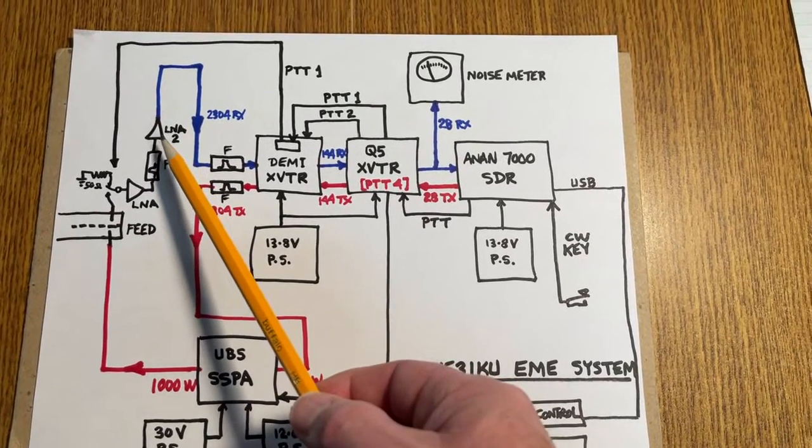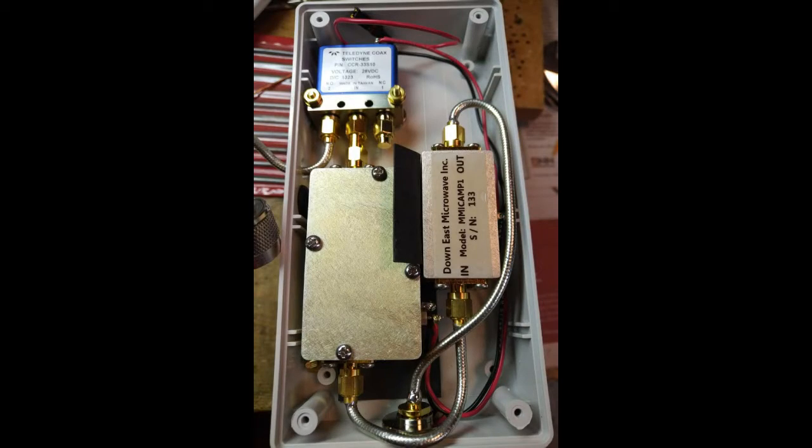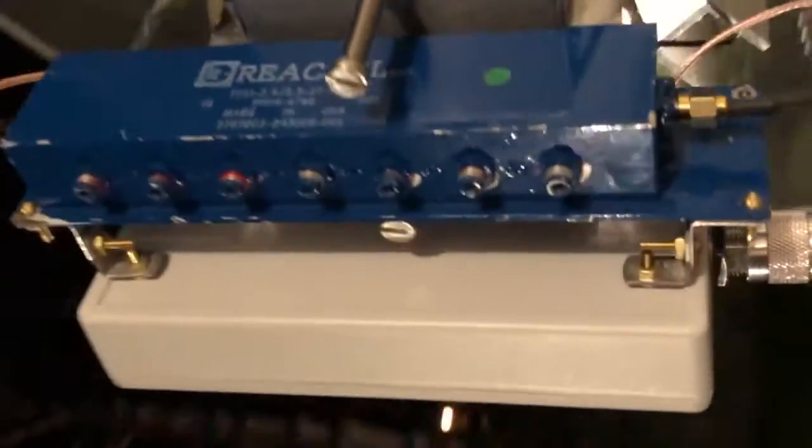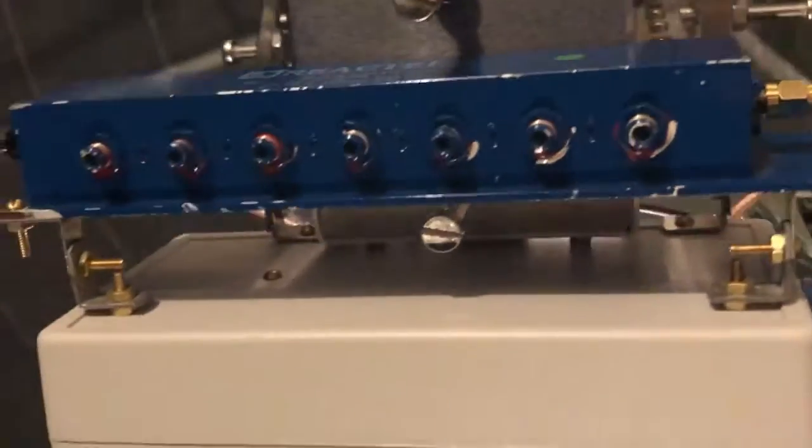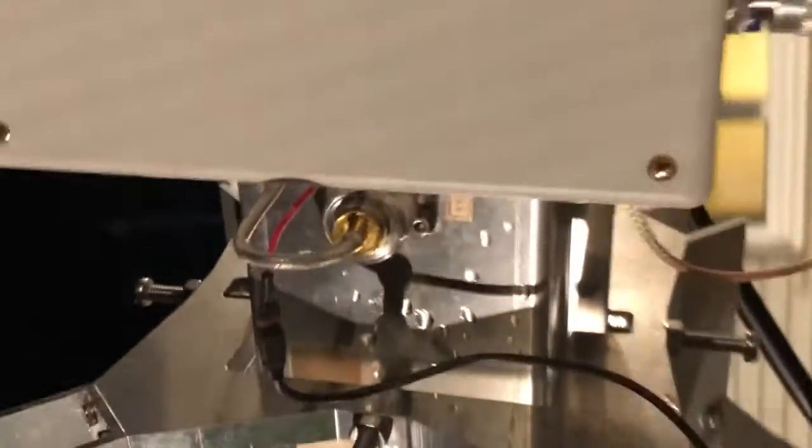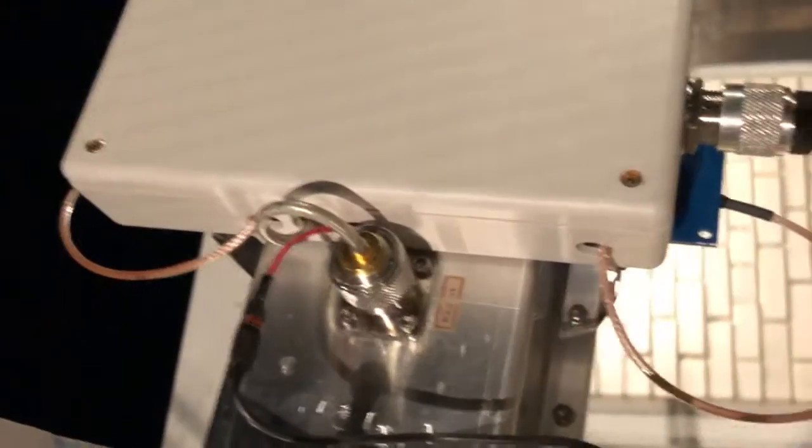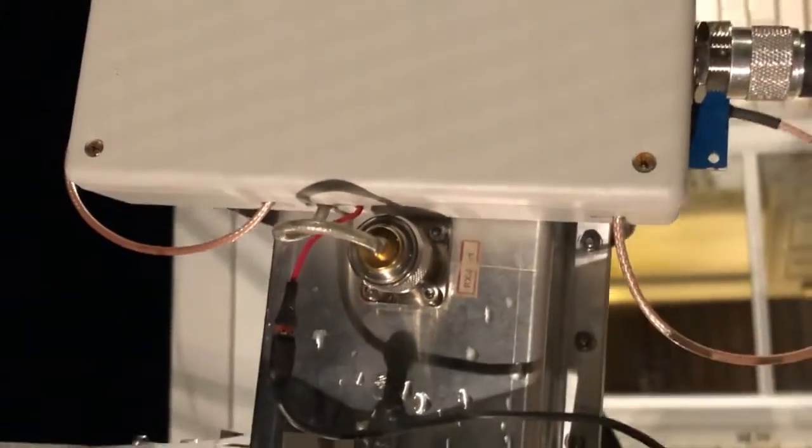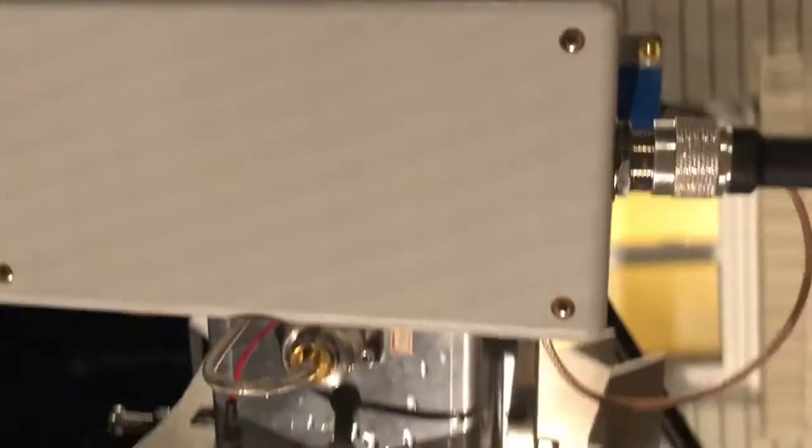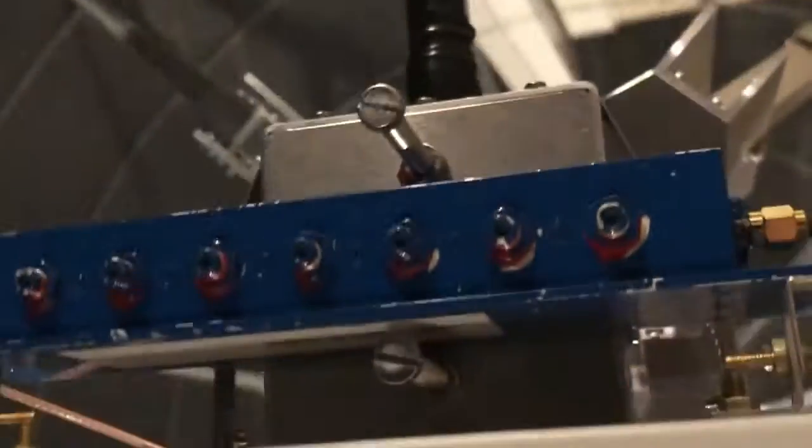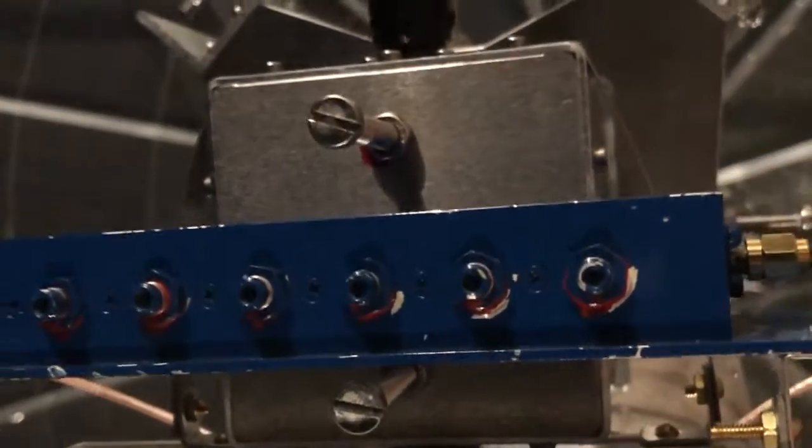The low-noise amplifier is a Downeast Microwave model L13ULNA. It has a gain of 15 dB and a noise figure of less than 0.6 dB. And that second low-noise amplifier is a Downeast Microwave MMIC amplifier with a gain of 17 dB and a noise figure of 1.3 dB.